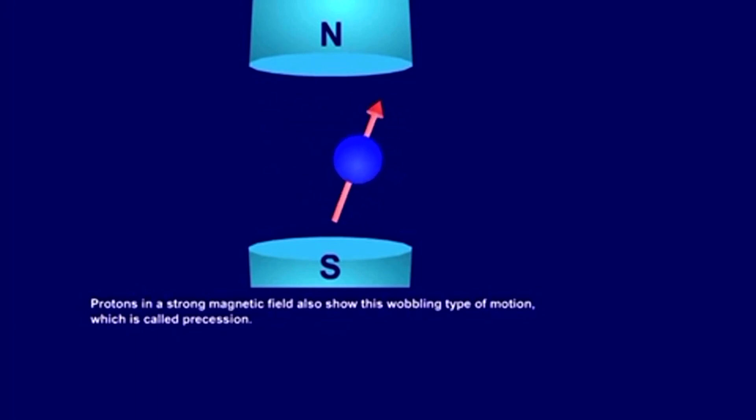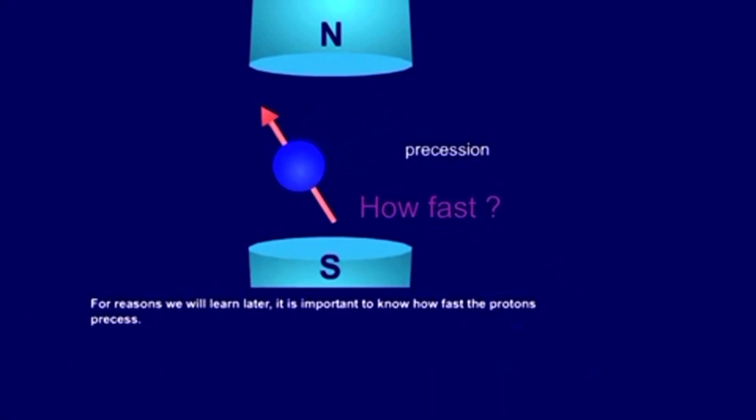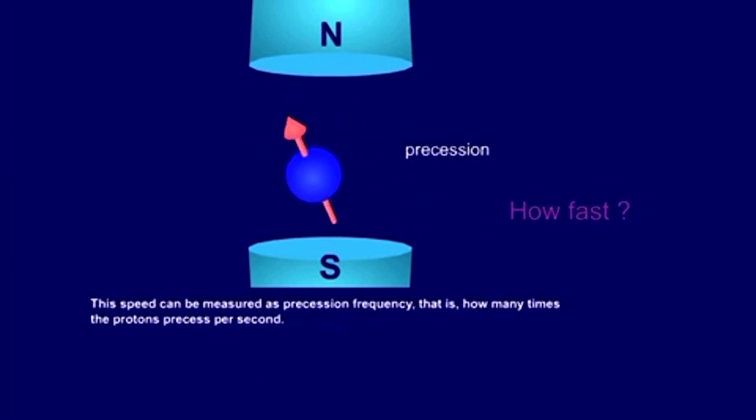In real life, this is a very fast movement. For reasons we will learn later, it's important to know how fast the protons precess. This speed can be measured as precession frequency, that is, how many times the protons precess per second.